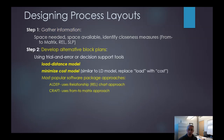Step two: we can develop alternative block plans. This is a trial and error method discussed in the book. We can use things like load distance models or a minimize cost model, which is very similar except we replace load with a cost value. There are software packages used in industry — ALDEP, which uses a relationship chart approach, and CRAFT, which uses a from-to matrix approach.